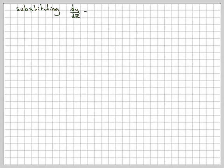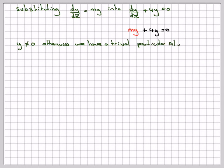If you substitute dy by dx is equal to my into the original equation, dy by dx plus 4y is equal to 0, then you're going to get my plus 4y is equal to 0. Now y cannot be equal to 0, otherwise we just have a trivial particular solution.